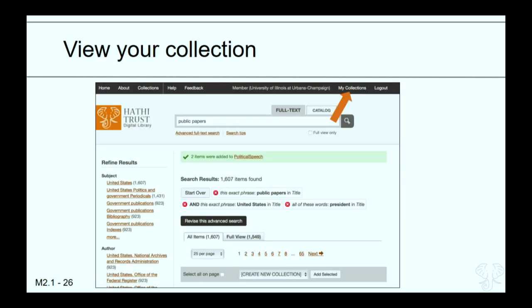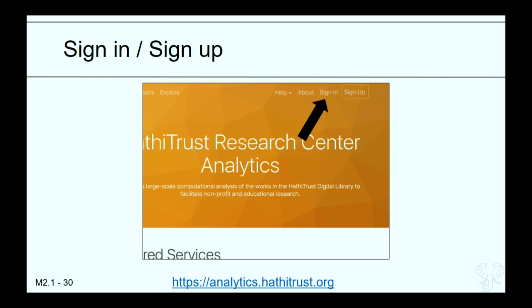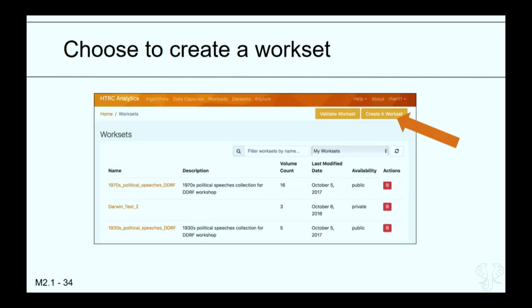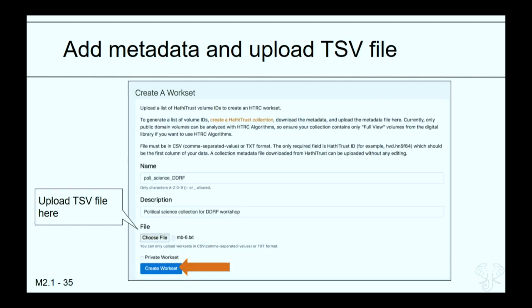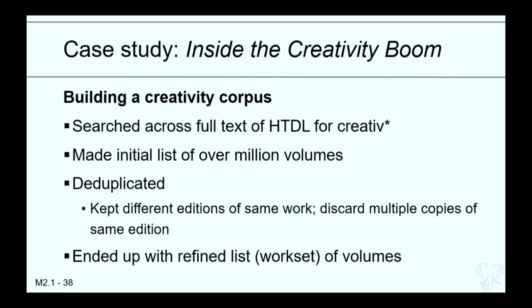In our closing minutes, let's look at what Sam did. He searched across the full text of the HathiTrust Digital Library for 'creative' — the root of it — wanting results that either contained 'creative' or 'creativity.' After the search, he had an initial list of over 2.7 million volumes. There were duplicate materials, so he decided to keep different editions of the same work but discard multiple copies of the same edition — since three libraries may have digitized the same edition and all three would be added if you don't identify those copies. The deduplication with over a million volumes was not done by hand, but by using metadata to filter through and filter out the volumes he didn't want.